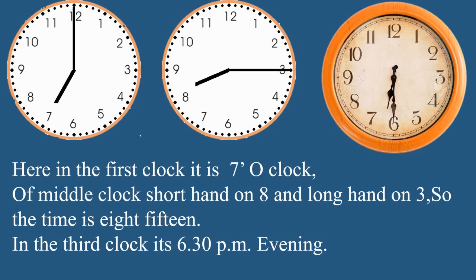Now the third clock — you can see where the short hand and long hand are. The short hand is in between 6 and 7, which means it is the hour hand. And the long hand — that is the minute hand — it is on 6. So students, what is the time here? Yes, very good students. The time is 6:30 PM, meaning 6:30 in the evening.